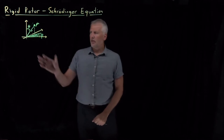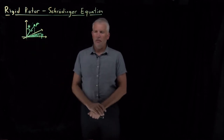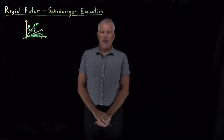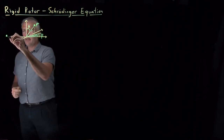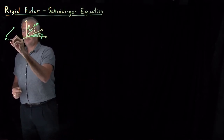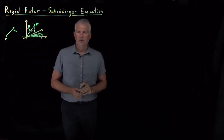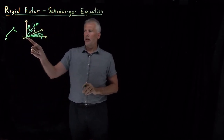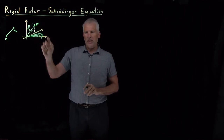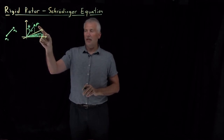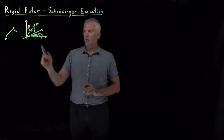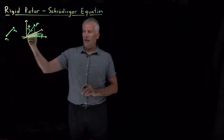We've developed a model for the geometry of a diatomic molecule and determined that rather than thinking about a molecule with two different masses and two atoms at two different positions, we can think of a single point with mass mu, the reduced mass, at a distance r from the origin with the same angles theta and phi.